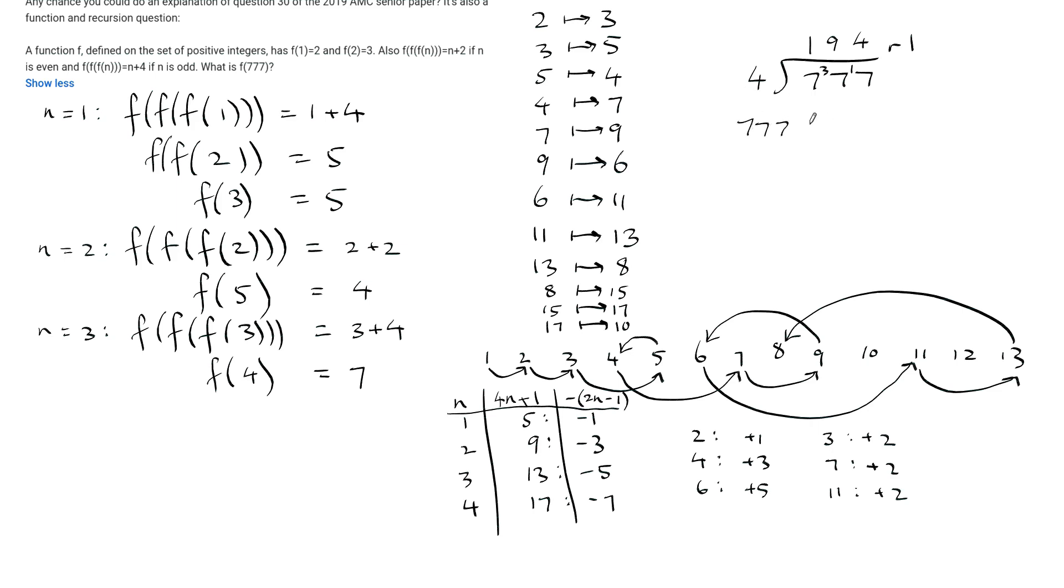So 777 is 4 times 194 plus 1. That's what the division is telling us. So the n is 194. And then what we could do is work out the number that it maps to is the original number minus this. So 4n plus 1 minus 2n minus 1, we could simplify that first. So that goes to 2n plus 2. So we just need to work out 2 times 194 plus 2, so that would make 390.